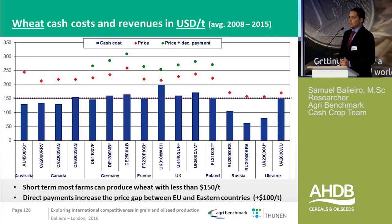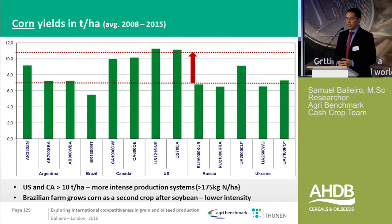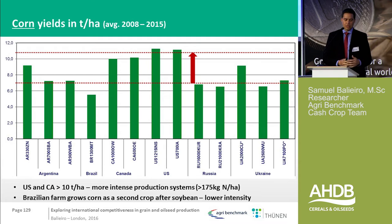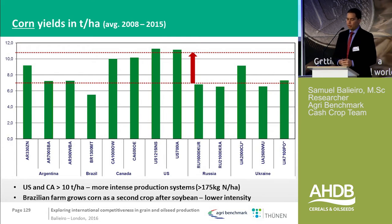Moving to corn — what we saw in wheat is that Russia and Ukraine are cost leaders there too. For corn, we have a much more diverse picture. Here we also have Argentina coming into play, along with Brazil, Canada, US, Russia, and Ukraine.